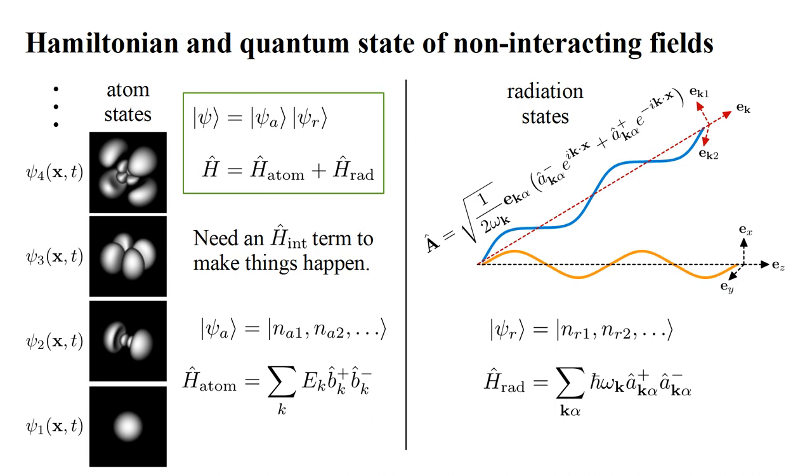We currently have quantum field descriptions of atomic electron states and the radiation field, but we lack an interaction mechanism that can account for emission and absorption of radiation by the atom.